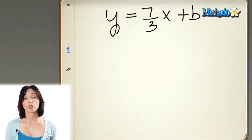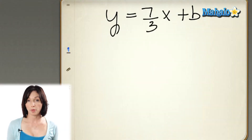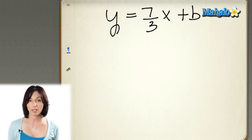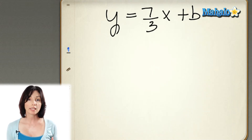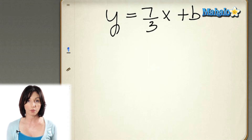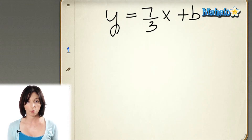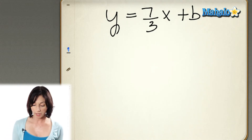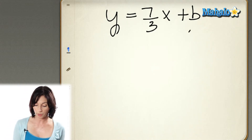Now we need to find b, the y-intercept, and this is how you do that. So far, what we have is y equals 7 thirds x plus b. I'm going to take one of the points that I used to find the slope and plug it into this equation and solve for b. So let's use the point (3, -5).